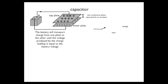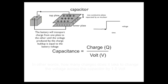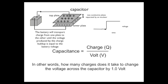The battery transports charge from one plate to the other until the voltage produced by the charge buildup equals the battery voltage — in this case, one volt. I can plot how long it takes for that charge to build up: voltage on the y-axis, time on the x-axis. When I close the switch, the charge builds up immediately and the capacitor is fully charged. Capacitance, by definition, equals the charge per volt — how many charges it takes to change the voltage across the capacitor by 1 volt, or in our case, 1 millivolt.